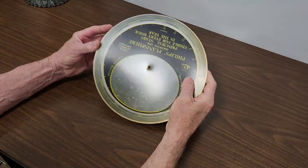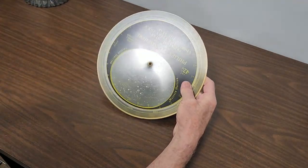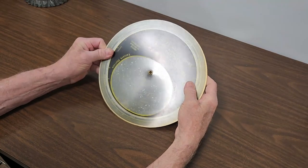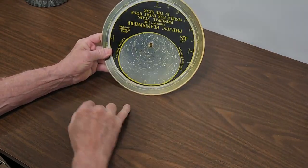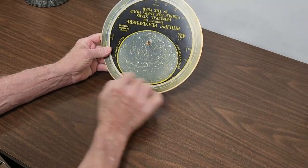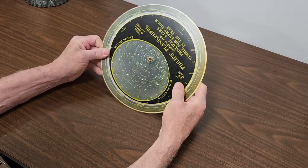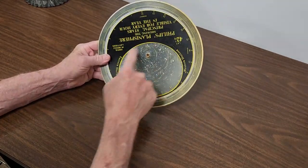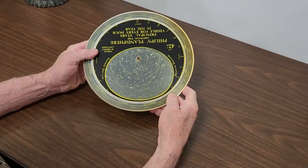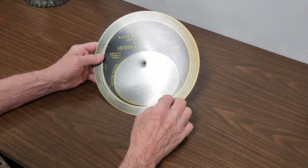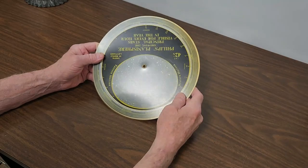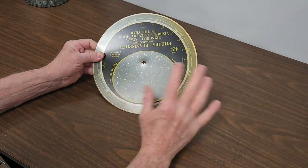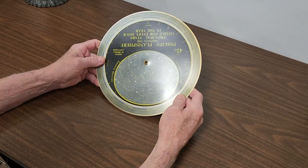You all know what a Planisphere is, probably. It's just a simple device to help you figure out what's in the sky at a given time. You set the time of day versus the date, and you get a pretty good, rough idea of what the sky looks like. It's very distorted because it's so small, but it does at least give you an approximate idea of what's in the sky at a particular time, and approximately where it might be.